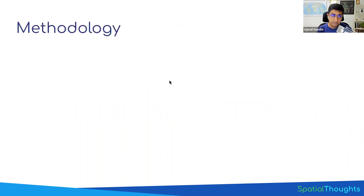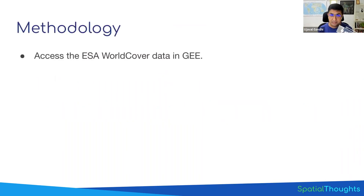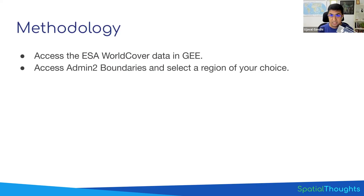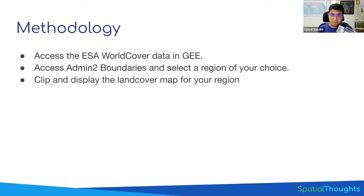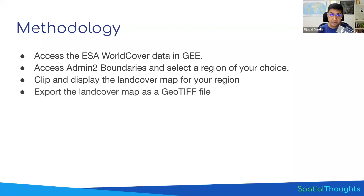In part one of the project, we will first learn how to load this data into Google Earth Engine. We'll load some admin boundaries and select a region of choice. We'll work with admin2 data, but if you want to use your own regions, you can upload a shapefile and select a region from that as well. We'll then clip the data to your region, and once we have the land cover map, we'll export it so you can download it to your computer as a GeoTIFF file.